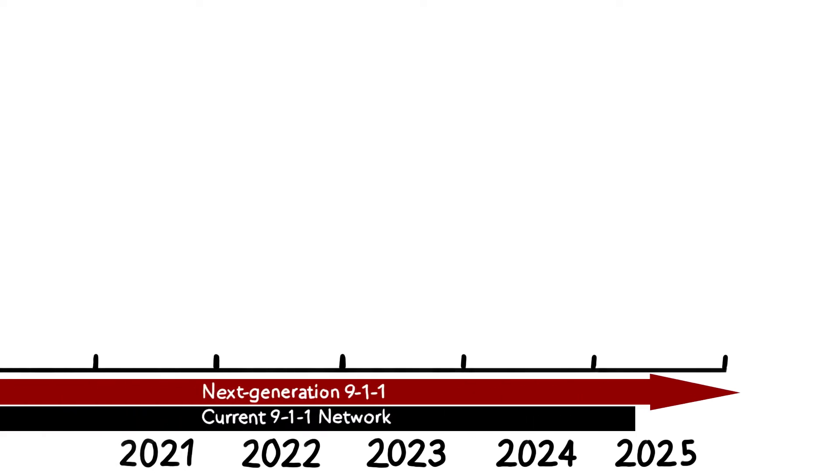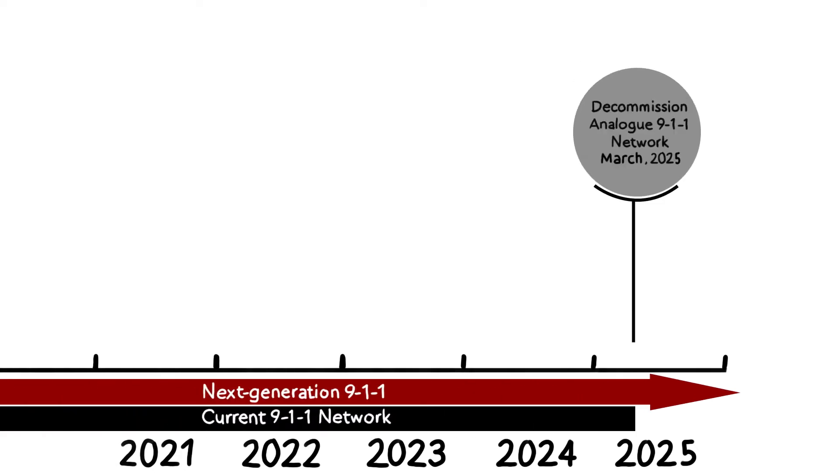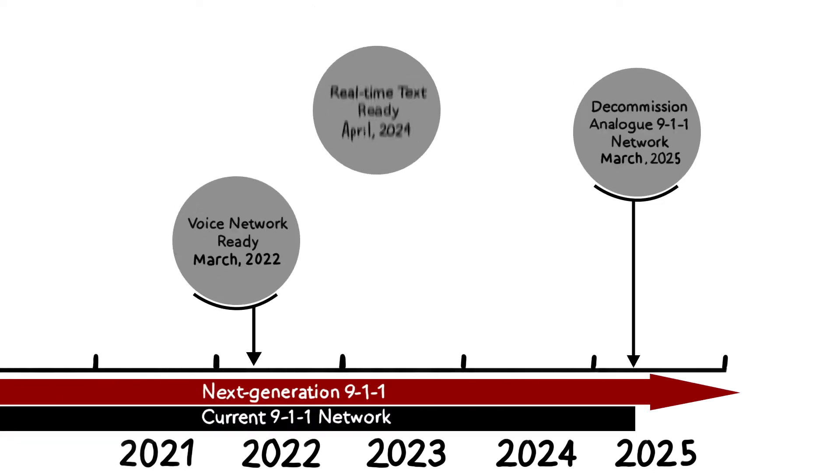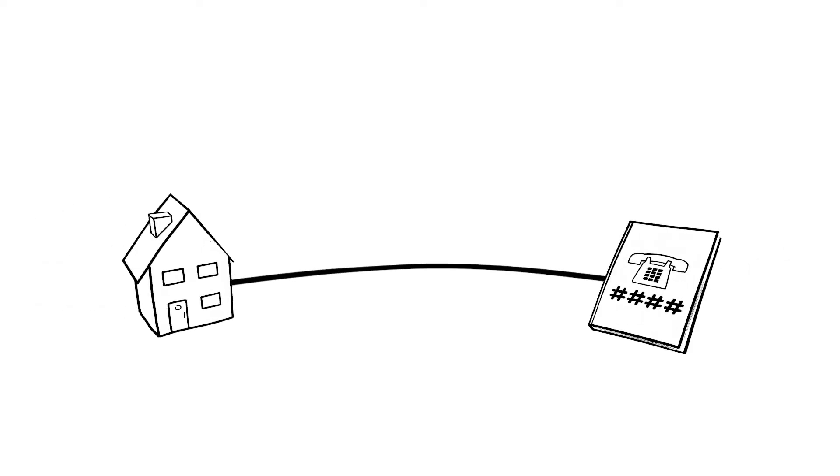The CRTC has directed telecom carriers to decommission non-next-generation components of the 9-1-1 networks. The current 9-1-1 infrastructure was designed for landline calls associated with a fixed address.